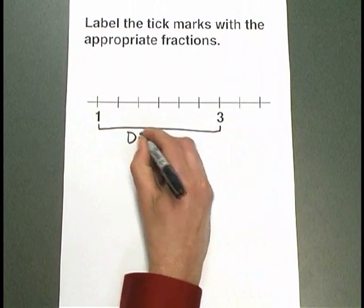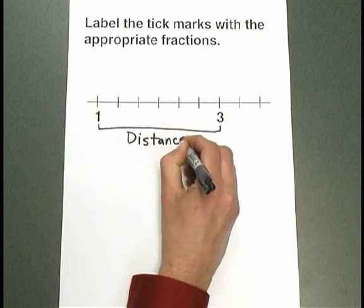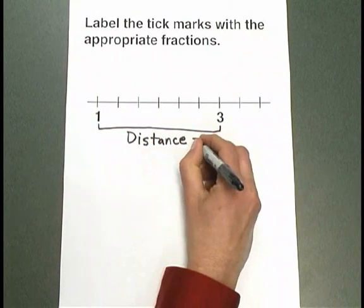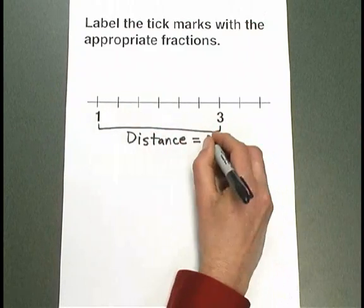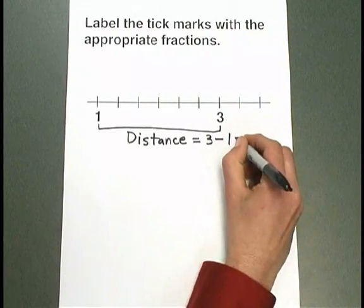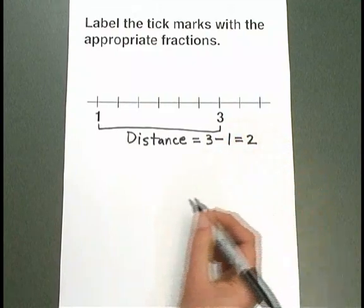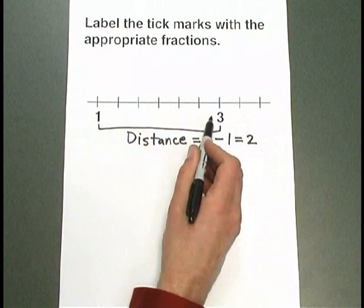That distance we can get by subtracting. We're going to subtract 3 minus 1, the larger number minus the smaller. 3 minus 1 is 2. 2 represents the distance from 1 to 3.